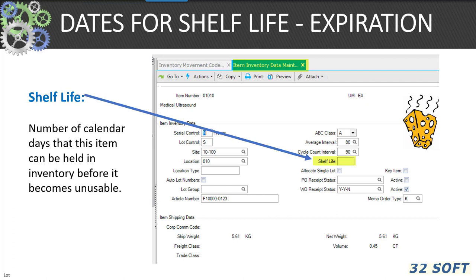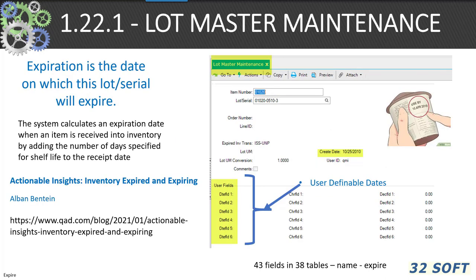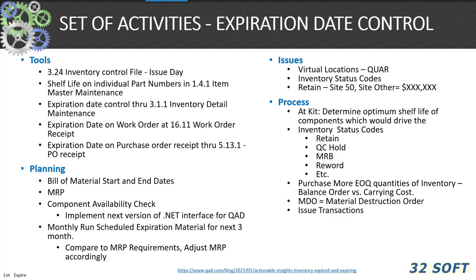Dates for shelf life and expiration: shelf life is the number of calendar days an item can be held in inventory before it becomes unsuitable. In 1.22.1 lot master maintenance, this allows for a series of user-definable fields. The expiration date is the date on which a lot will expire — equal to the shelf life days plus the date received. There's a great blog article in the Actual Insights by Alban Bintin of QAD on inventory expired and expiring.